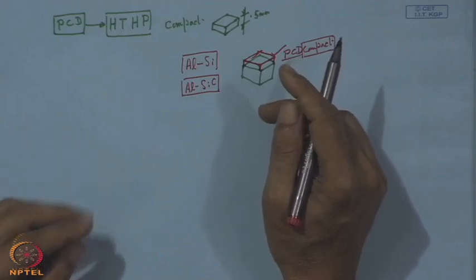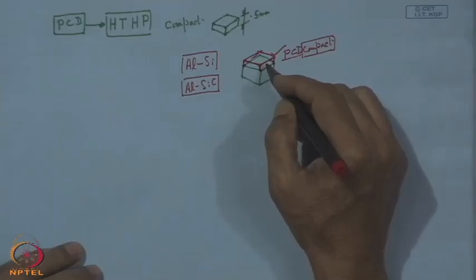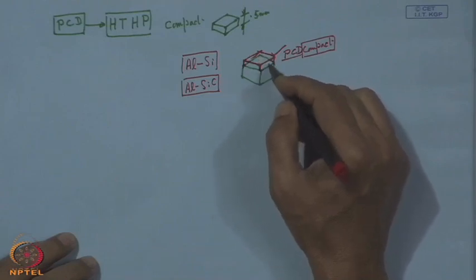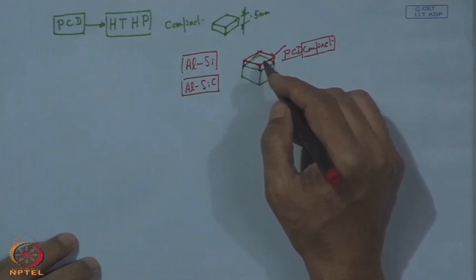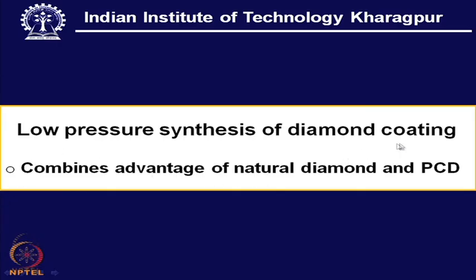As a result, we find diamond coating following low pressure synthesis. When we talk about polycrystalline diamond, it can also be synthetic diamond — tiny crystals of synthetic diamond converted into a compact using high pressure, high temperature technology. But as we see from the very name, this new process is actually the low pressure synthesis of diamond.